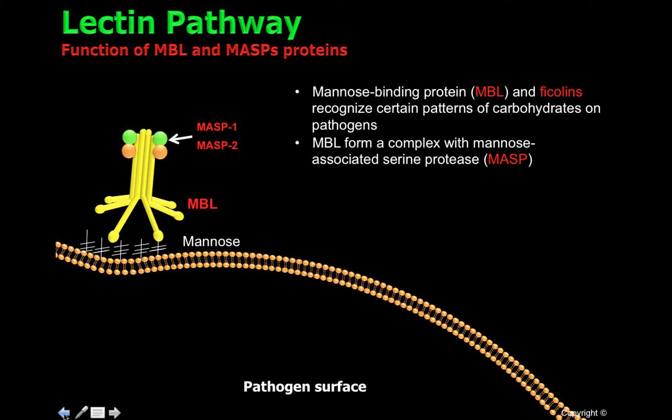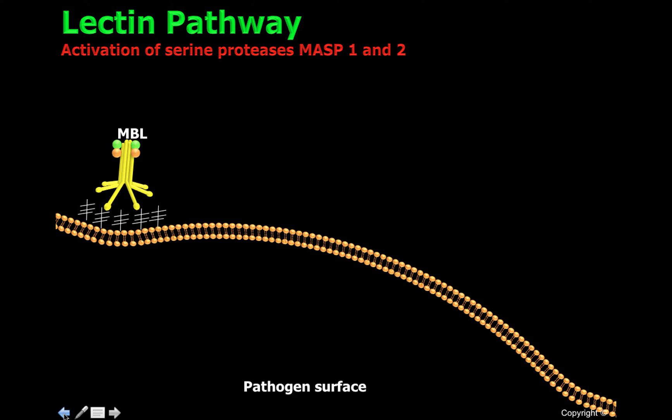MBL forms a complex with mannose-associated serine proteases, or MASPs. These proteases play a fundamental role during the lectin pathway activation. Once MBL recognizes mannose patterns on the surface of pathogens, it will activate the serine protease 1, or MASP1, and this one will activate the MASP2 serine protease.